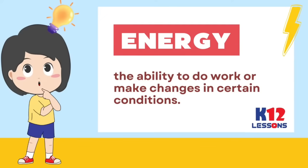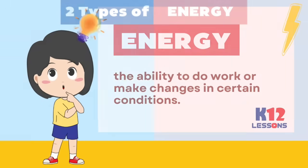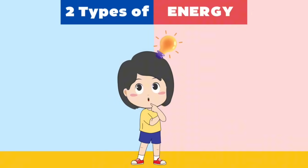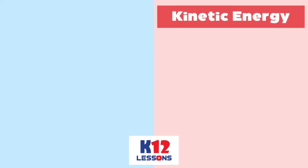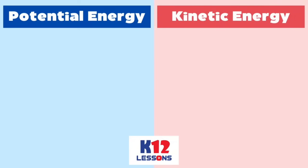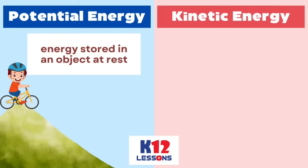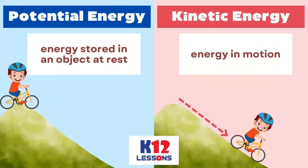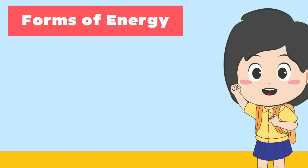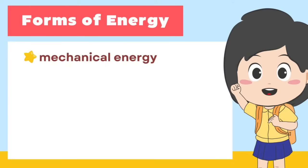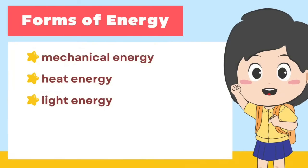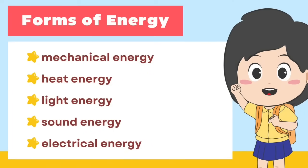In physics, energy is described as the ability to do work or make changes in certain conditions. Energy can be classified in two types: Kinetic and Potential Energy. Potential Energy is energy stored in an object at rest, while Kinetic Energy is energy in motion. In this lesson, you will learn the different forms of energy such as mechanical energy, heat energy, light energy, sound energy, and electrical energy.